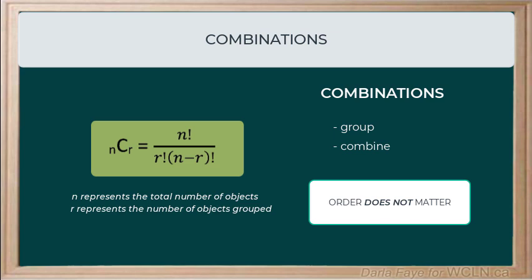Now, you might notice that this equation looks very similar to our permutations equation. Essentially, all that's happened here is I've divided by an extra r factorial. And what I'm doing is I'm eliminating the permutations that are the same combinations.